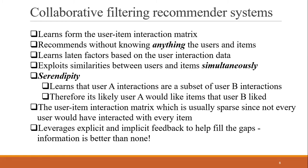The advantage this gives us is serendipity, because by doing that factorization we can pick up on subsets. We could say user A, based on his interactions, is a subset of user B. So everything that user A liked, user B liked, and there are some things user B liked that user A didn't look at yet — those become good candidates for new recommendations. Going back to the previous example, we may be able to recommend an action-type movie if user B was the superset and also liked action. So we get serendipity, and no domain knowledge is really necessary.